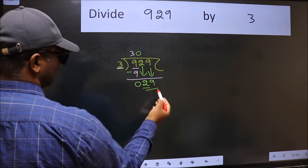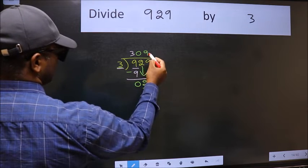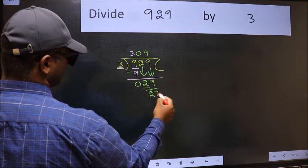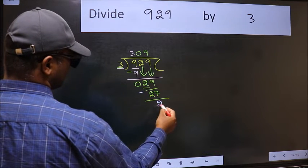Now, 29. A number close to 29 in the 3 table is 3 nines, 27. Now we should subtract. We get 2.